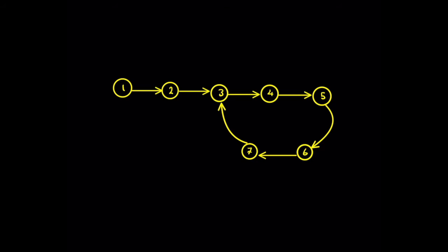So in this problem we are given a linked list — it might have a cycle or not. The question asks us to return null if there is no cycle, or return the starting point of the cycle if there is one. Let's see how we can solve this problem using the fast and slow pointer approach.